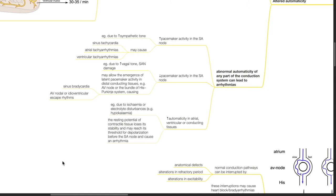Increased automaticity in atrial, ventricular, or conducting tissues can occur due to ischemia or electrolyte disturbances such as hypokalemia. The resting potential of contractile tissue loses its stability and may reach its threshold for depolarization before the SA node and cause an arrhythmia.